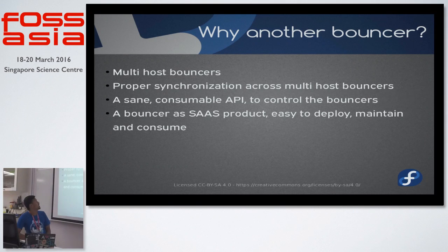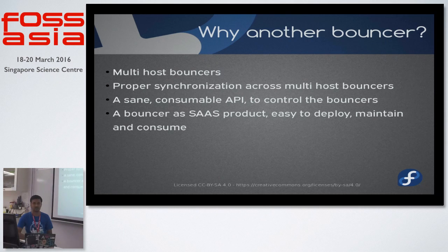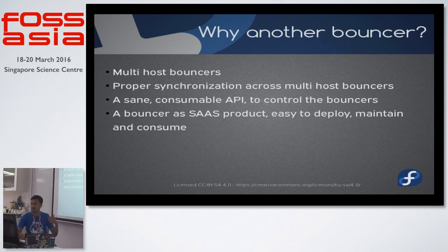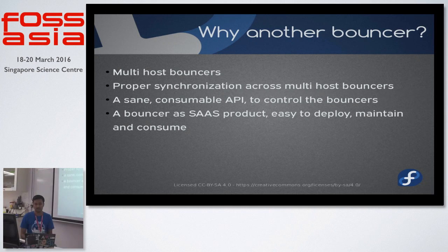But why another bouncer? We did some research on existing bouncers and saw there are options like ZNC, but we did not want to reinvent the wheel — however, the things we needed were not there. For example, multi-host bouncers: Freenode restricts your number of connections to 50, and if you want to increase that, you need to go through a long process. Instead, we thought of a multi-host system where if you get exhausted on a particular host, it would automatically scale to another host.